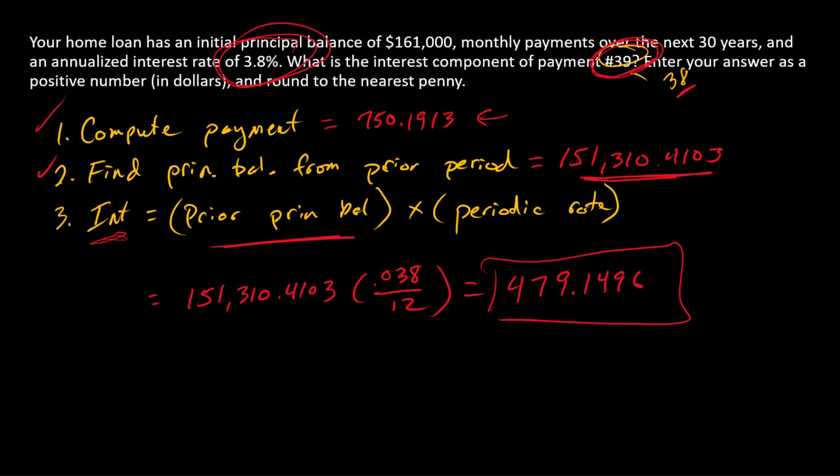Multiply through there and we'll see that we have an interest component of $479.1496. So there's the answer. That's the interest component.